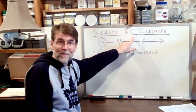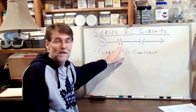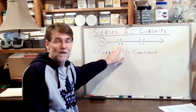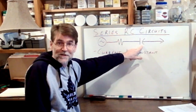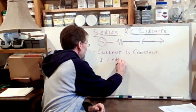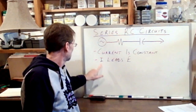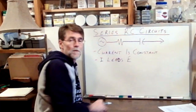The second thing we know is what we know because it's a capacitive circuit. At the resistor, voltage and current are in phase — no phase shift takes place. The phase shift occurs at the capacitor. And what is the relationship between the voltage vector and the current vector at the capacitor? The current leads the voltage. In an inductive circuit, the current lags the voltage; in a capacitive circuit, the current leads the voltage. Those are the two pieces of information we need to build our triangles.